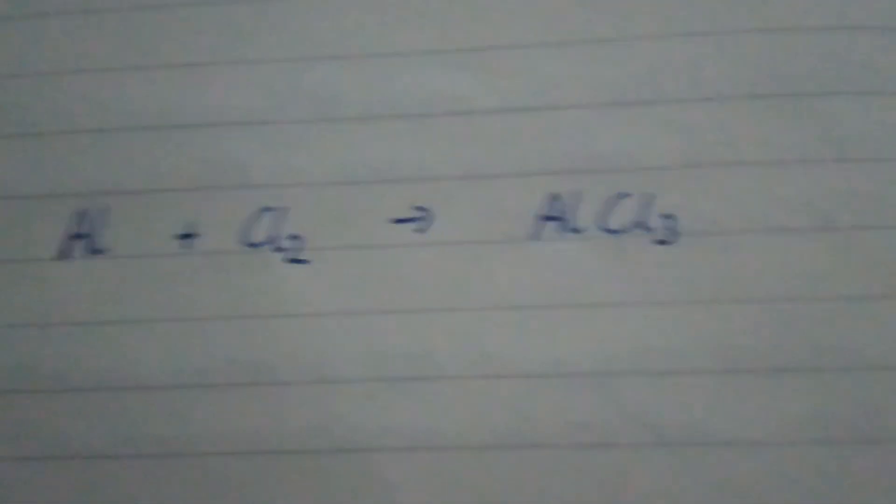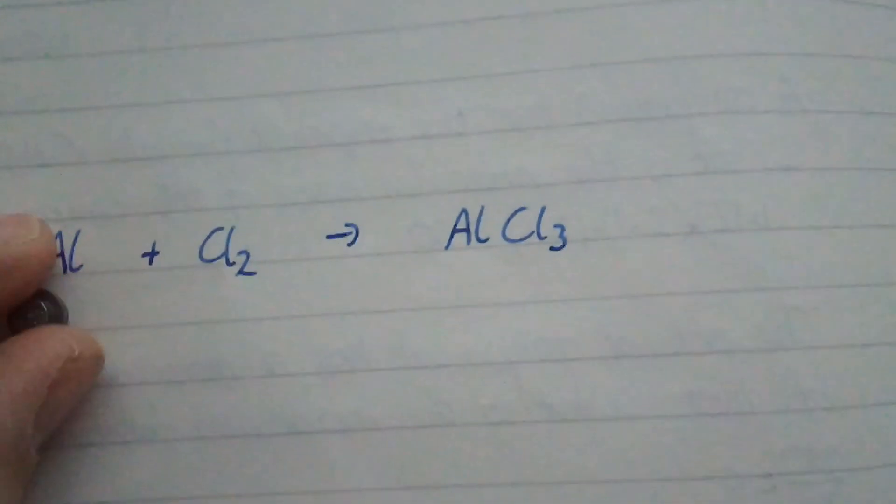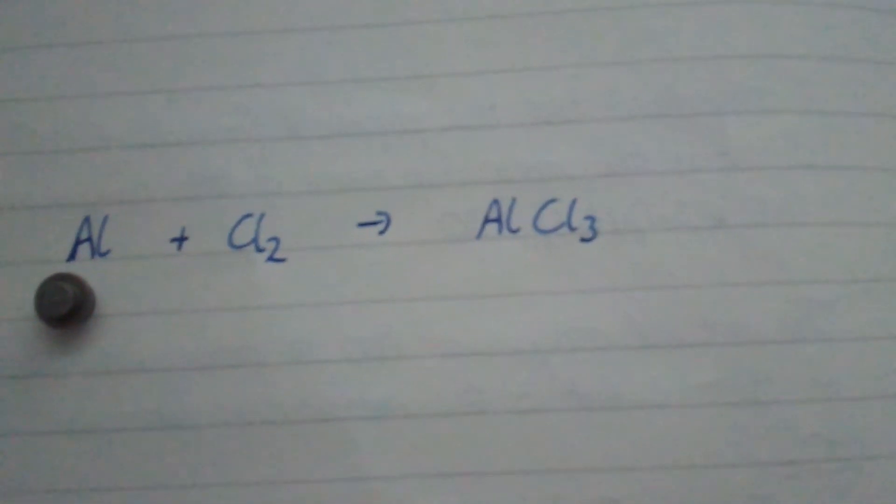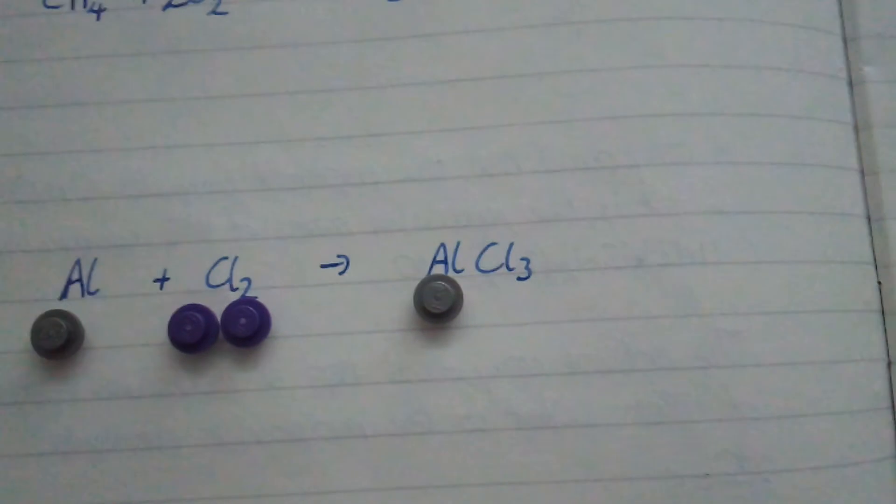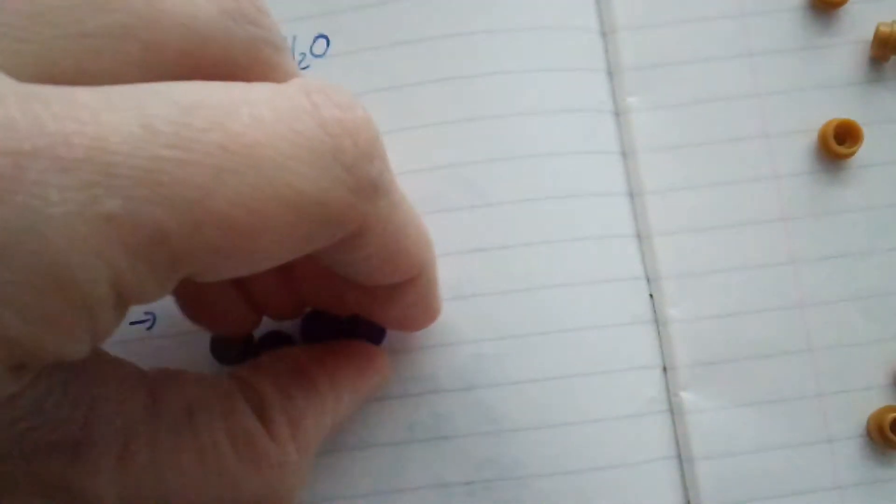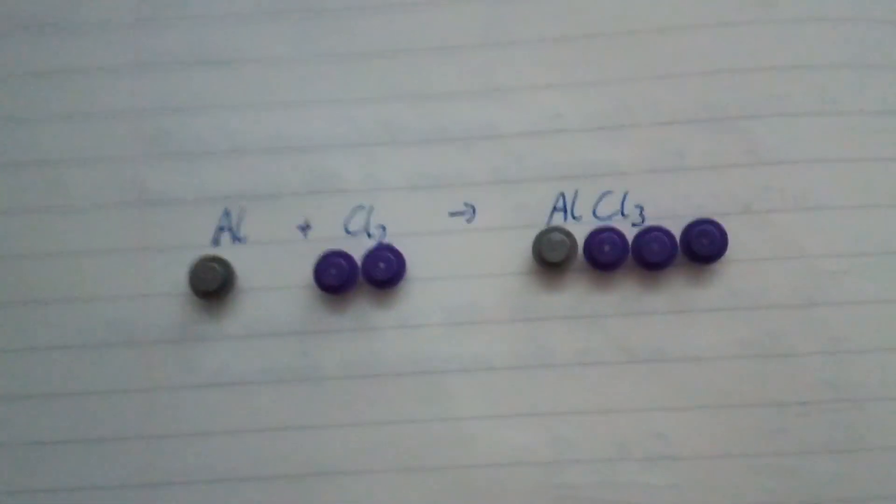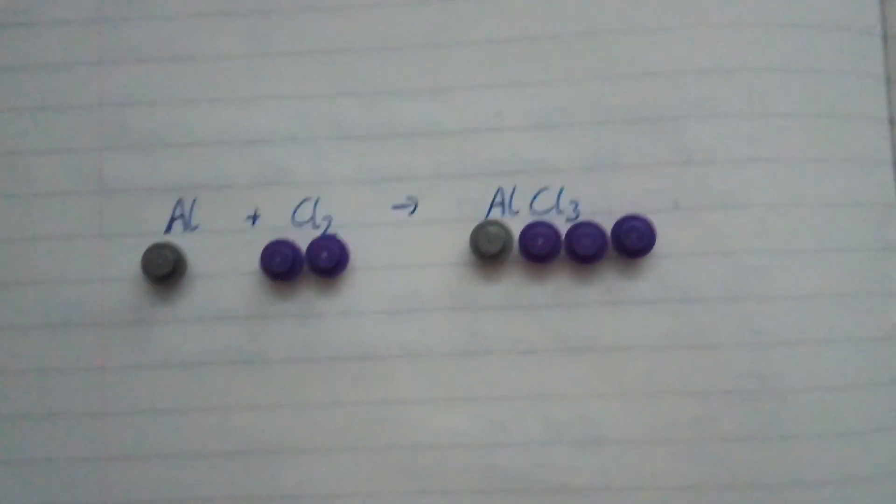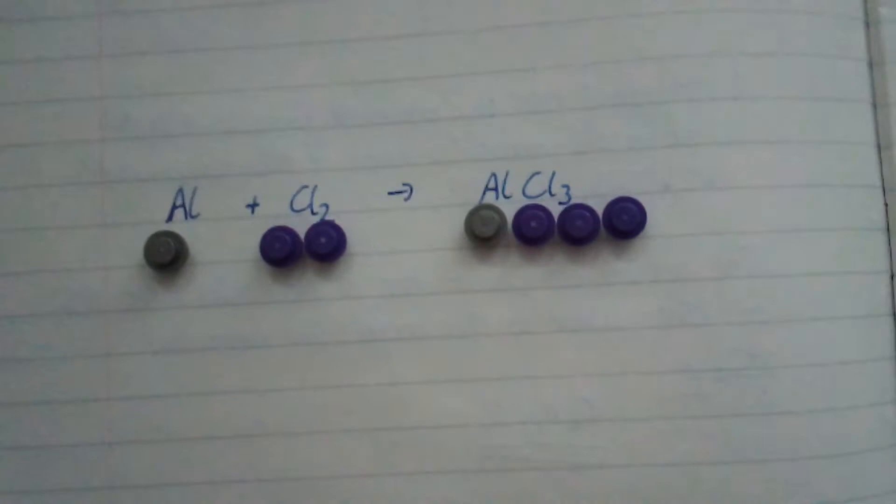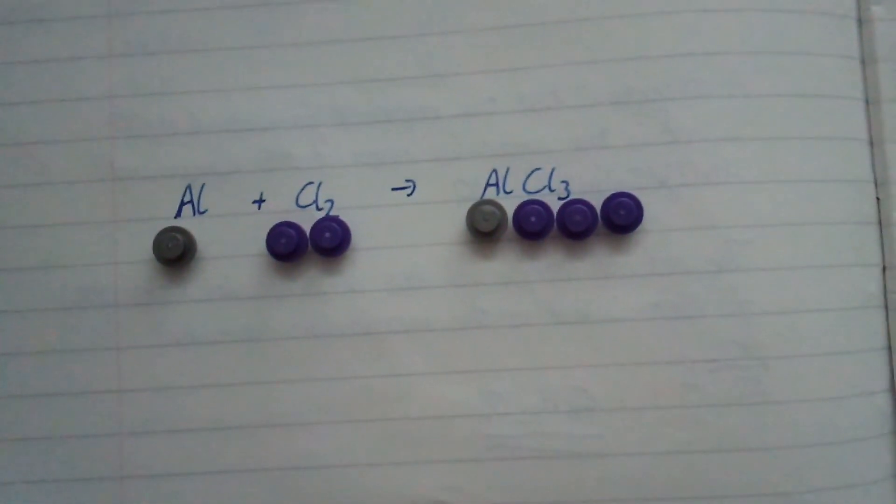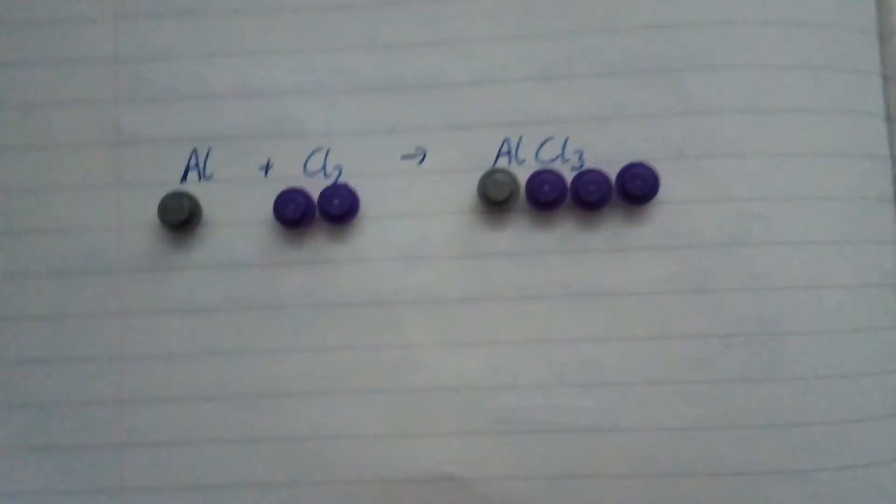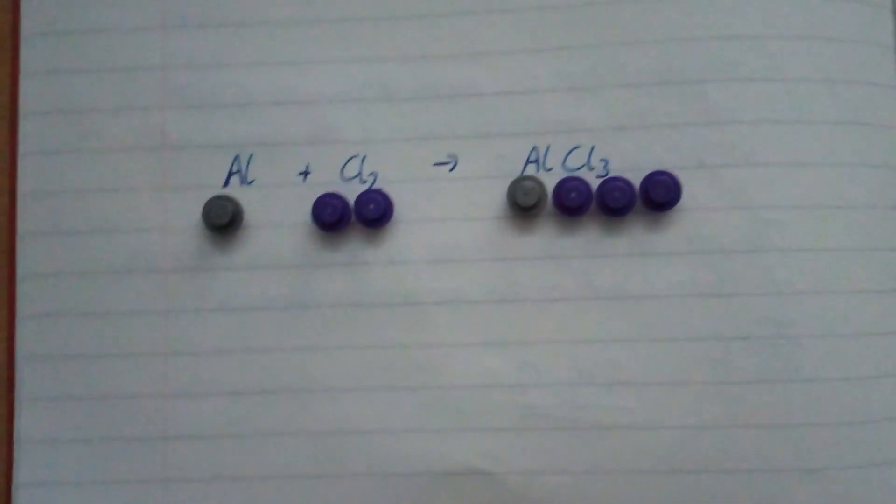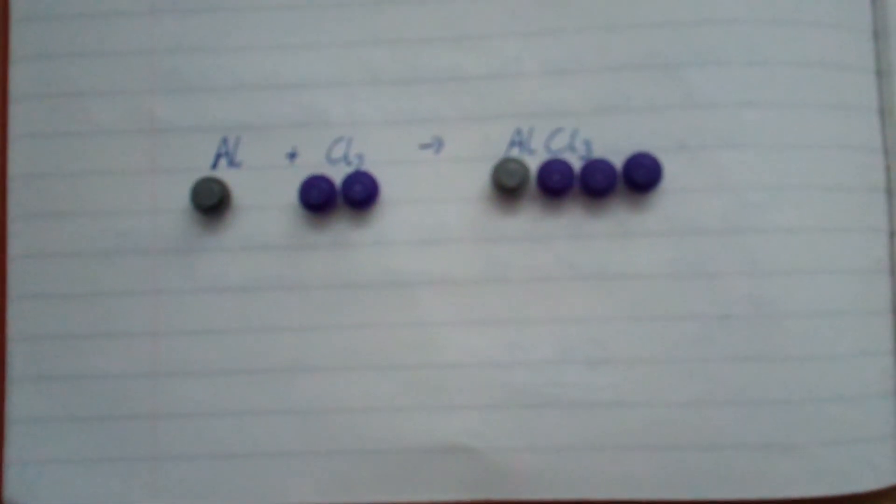So here we go. Aluminium and chlorine makes aluminium trichloride. So I have one aluminium. I have Cl2. And I make aluminium, one, two, three chlorines, aluminium trichloride. There we go. So immediately I can see my aluminiums are fine, but my chlorines are off. This one's quite hard though because I can't just double one thing up and it works. So I have to say I've got a two and I've got a three. What number do they have in common? What's their lowest common denominator, to use the mathematical phrases?